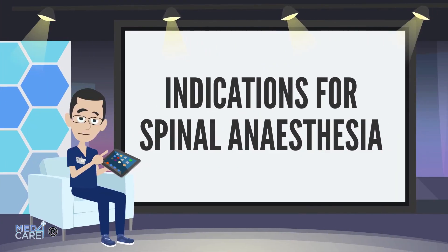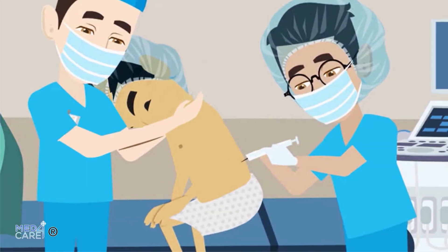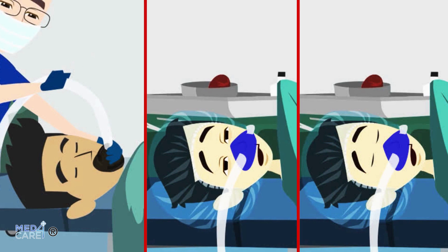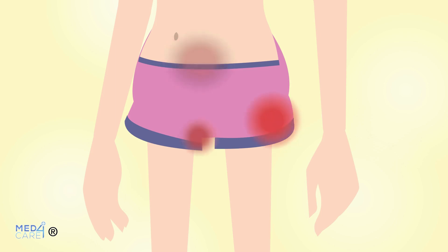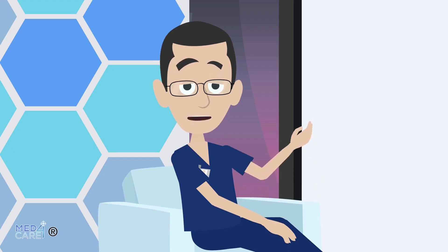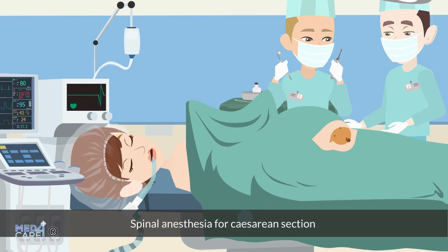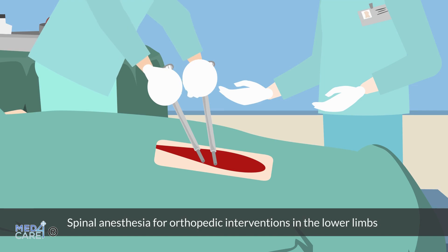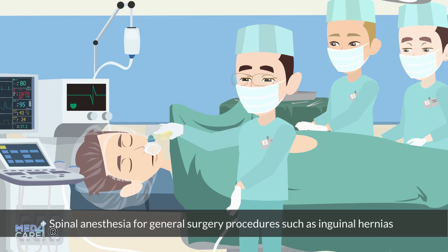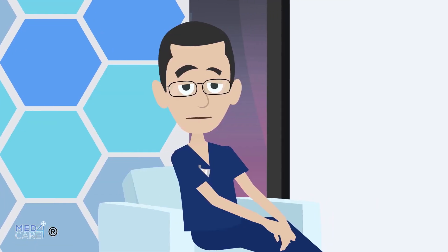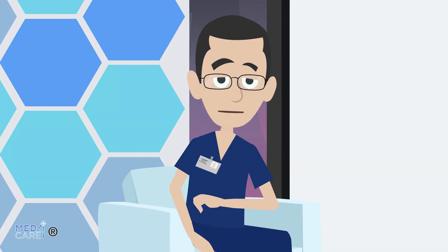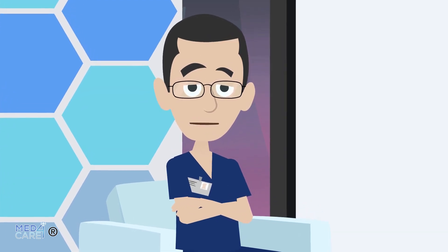Indications for spinal anesthesia: neuroaxial anesthesia is used as the only anesthetic or in combination with general anesthesia, conscious sedation, or deep sedation. Spinal anesthesia is commonly used for surgery involving the lower abdomen, pelvis, perineum, and lower limbs. The most common applications include caesarean section, lower limb orthopedic surgery, and general surgery procedures. It is useful for procedures under the navel, as this is the level of anesthesia that can be achieved with high safety, though it can also be practiced above the lumbar level in specific selected situations.